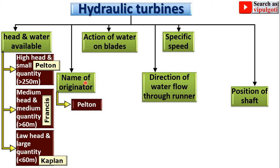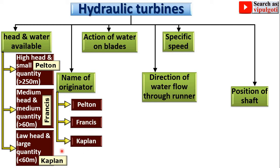Next, classification by name of originator. The turbines are named after the scientists who developed them: the Pelton turbine, the Francis turbine, and the Kaplan turbine.